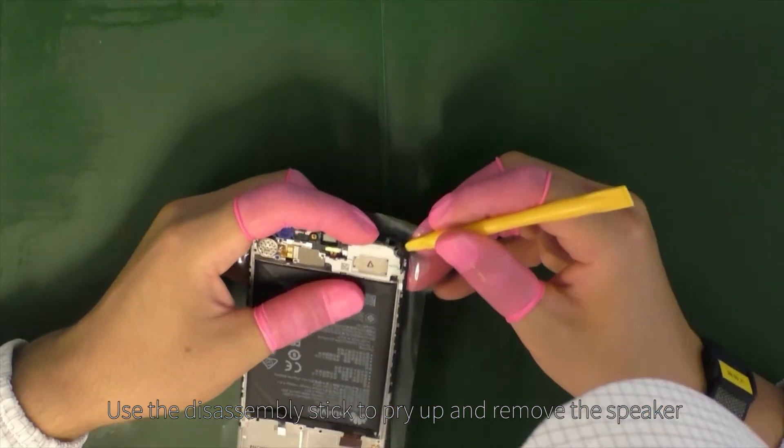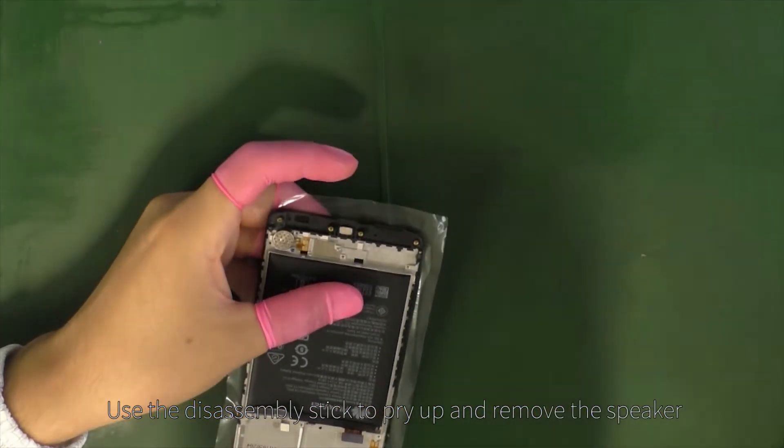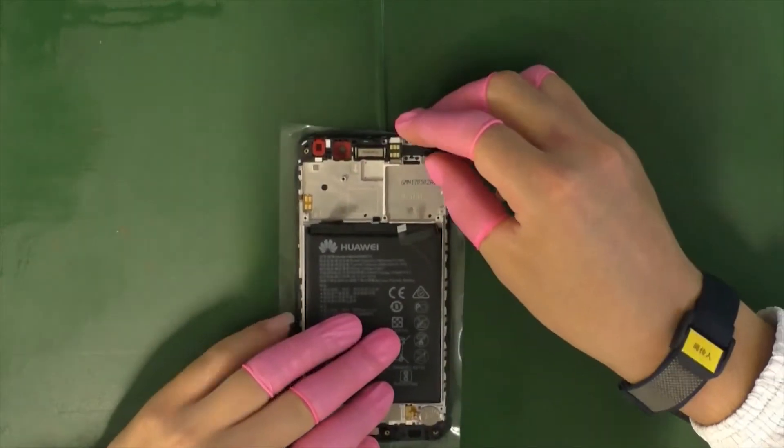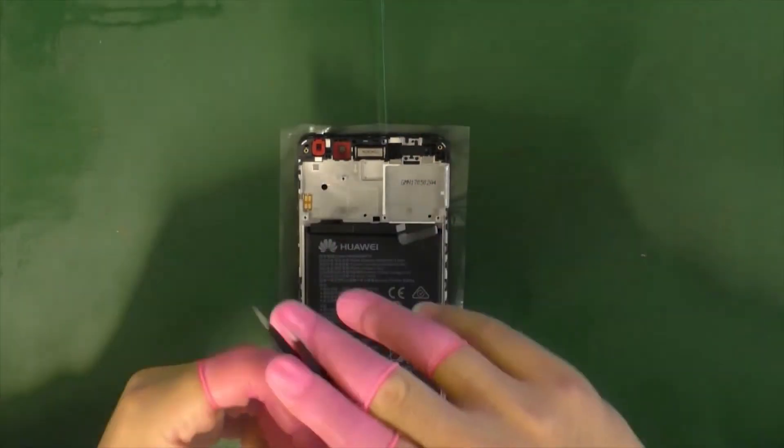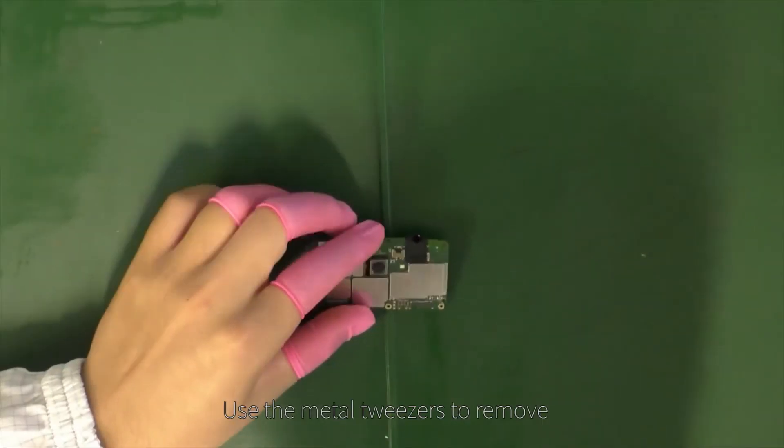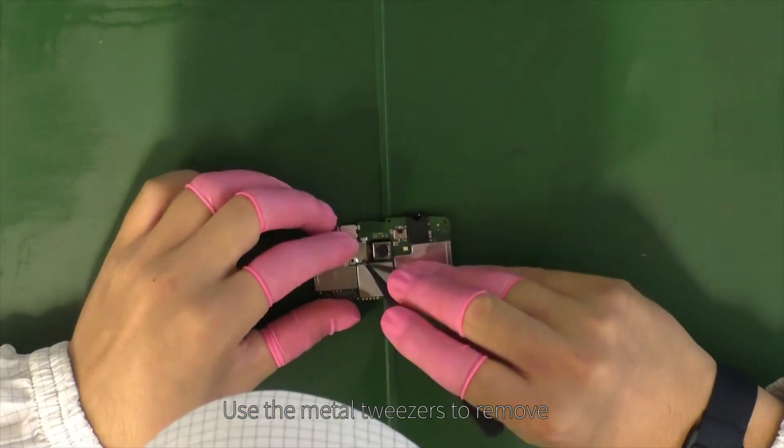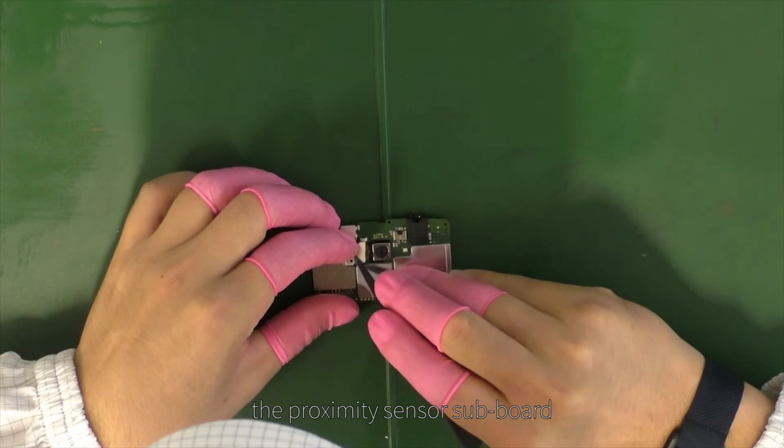Use the disassembly stick to pry up and remove the speaker. Use the metal tweezers to remove the proximity sensor subboard.